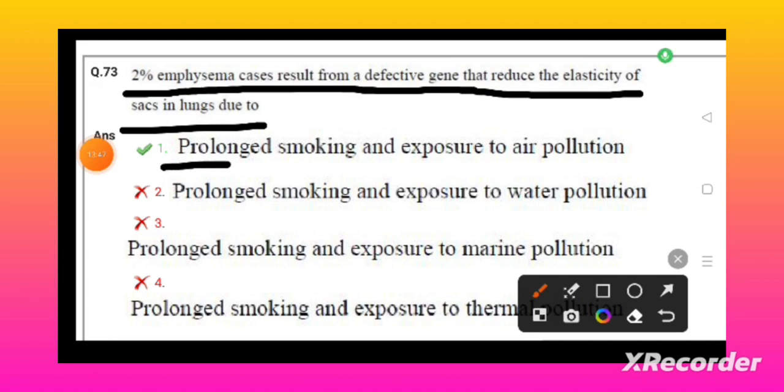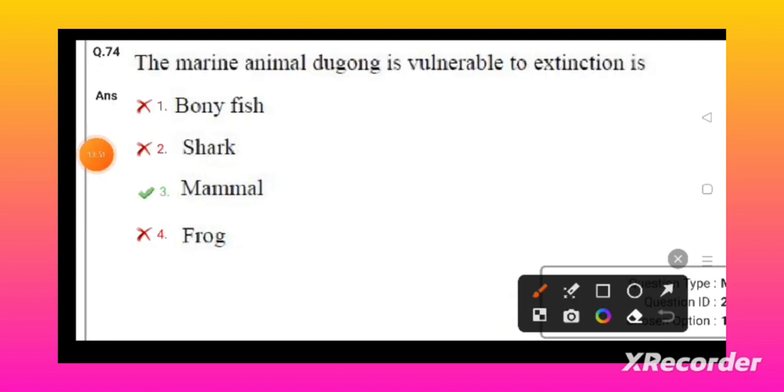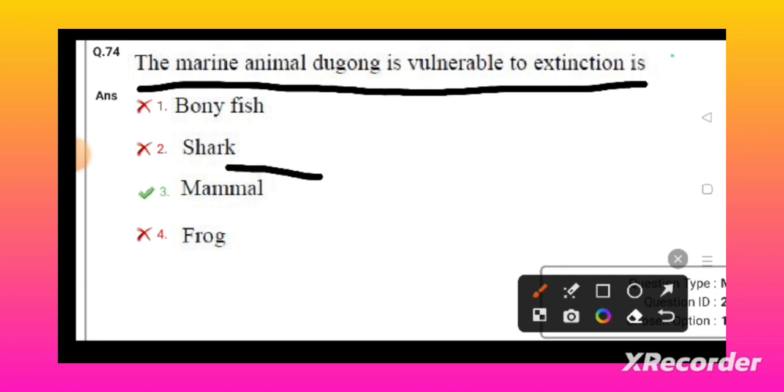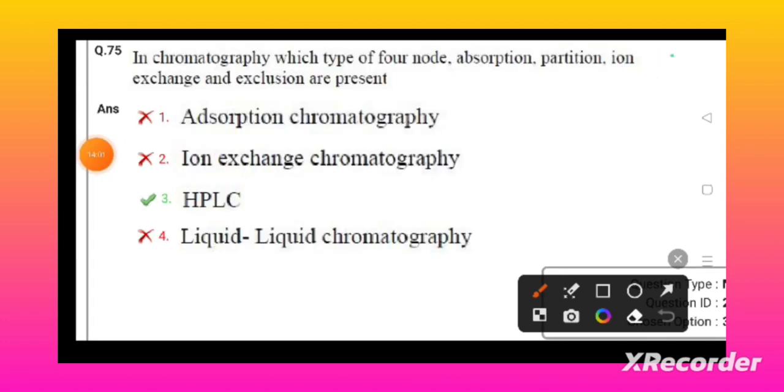Marine mammal dugong is vulnerable to extinction - it is a mammal. In chromatography, which type of four: adsorption, partition, ion exchange, and exclusion are present in HPLC (high-performance liquid chromatography).